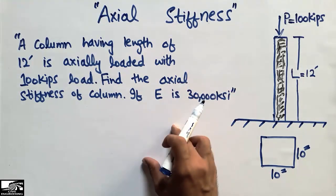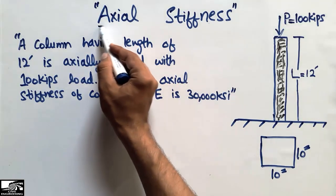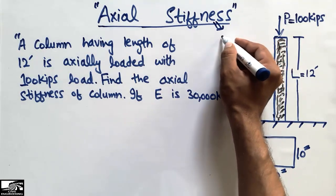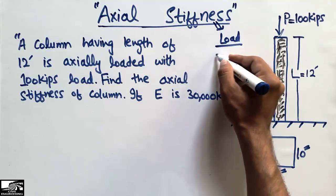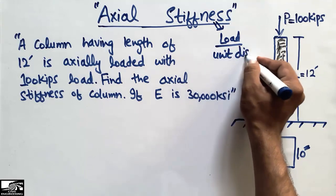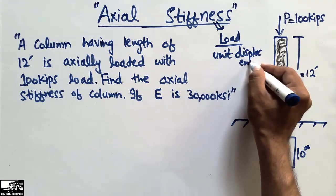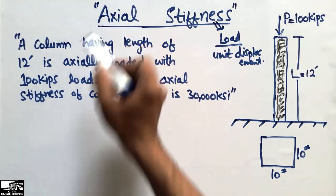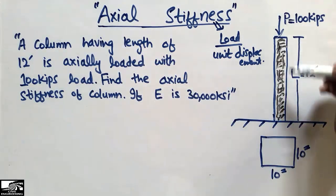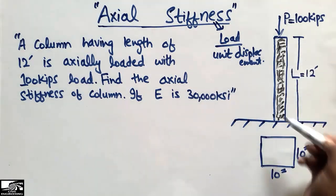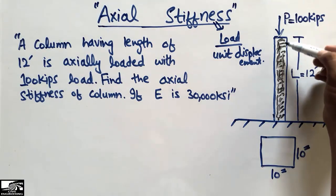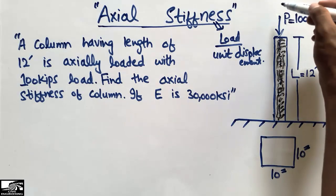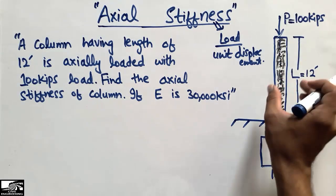In this lecture we will be solving a problem about how to find the axial stiffness of any column. Axial stiffness — the simple definition is: stiffness can be defined as the load per unit displacement. The axial stiffness means the ability to take the load of any member in the axial direction — axial means along the axis of the column.